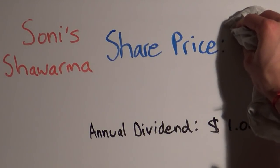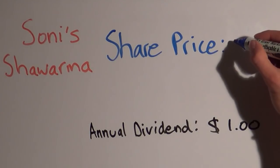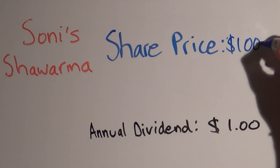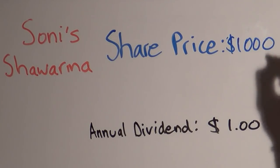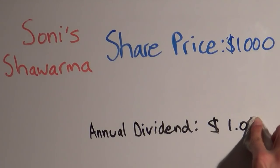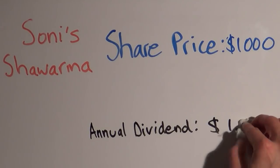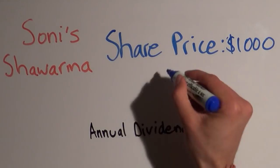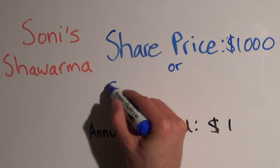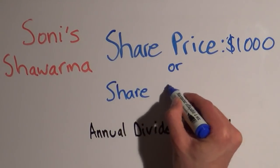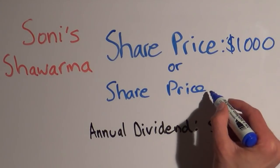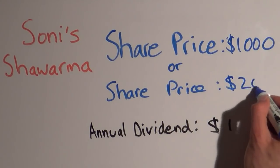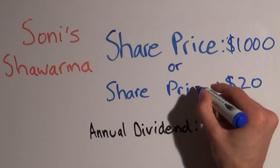What if I told you that one share of Sonishwarma costs one thousand dollars? Yes, one thousand dollars to buy one share of Sonishwarma, and it only pays us one dollar in dividends every year. What if I told you that one share of Sonishwarma costs only twenty dollars? Twenty dollars for one share and it pays us one dollar in dividends every year.